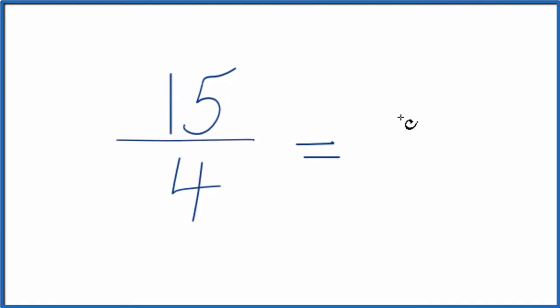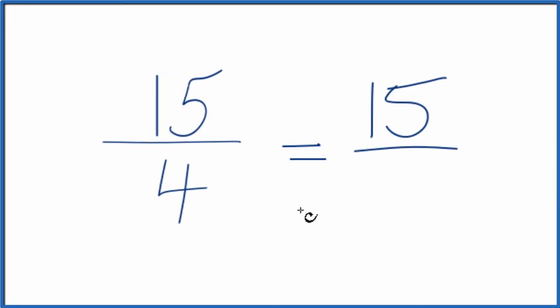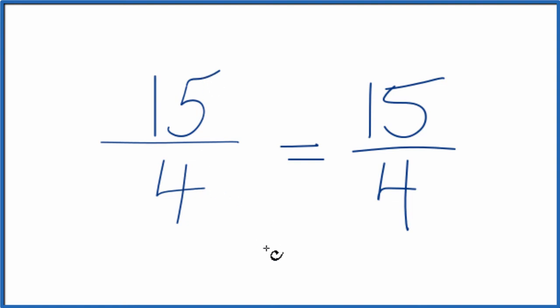So if we divide 15 by 1, we get 15. Divide 4 by 1, we get 4. And that's what we started with. So the fraction 15 fourths is already simplified. We can't reduce or simplify this any further.